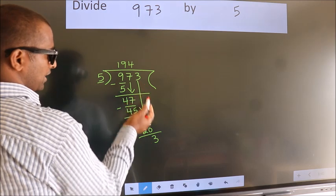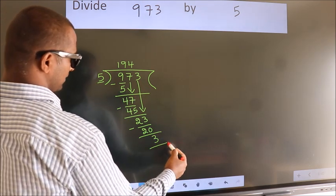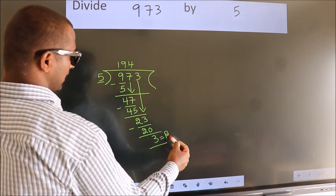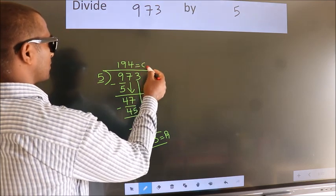No more numbers to bring it down, so we stop here. This is our remainder. This is our quotient.